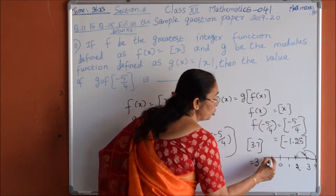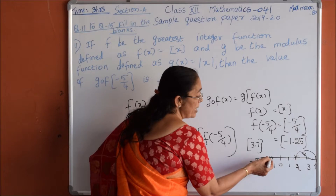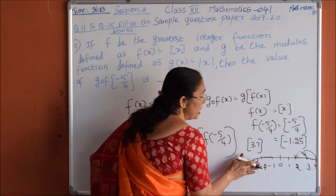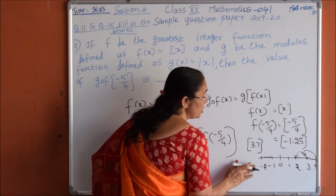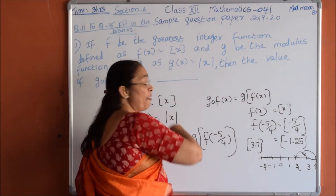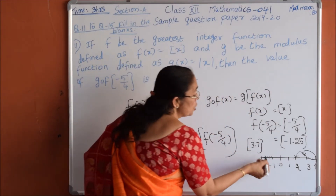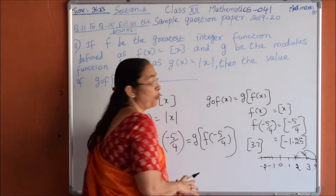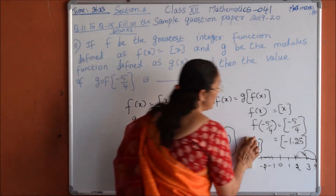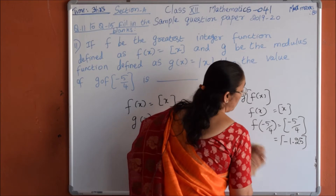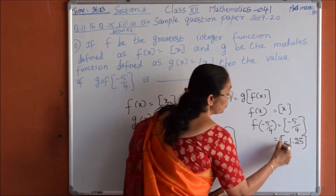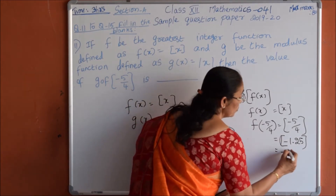Now for negative numbers: minus 1.25 lies between minus 1 and minus 2. We take the left-hand side value, so the greatest integer of minus 1.25 is minus 2.